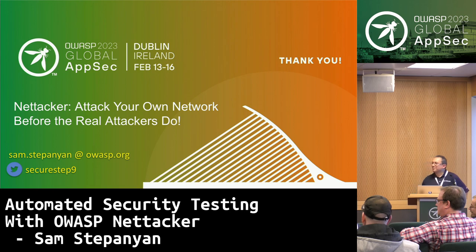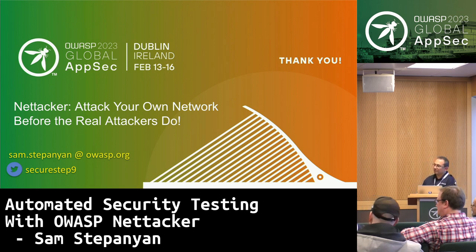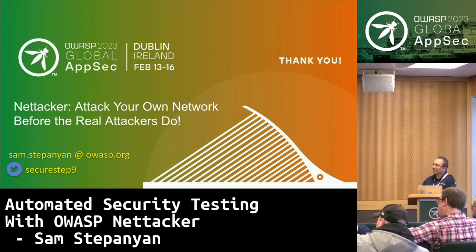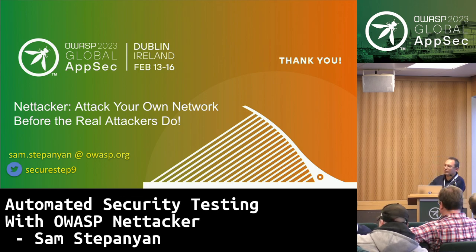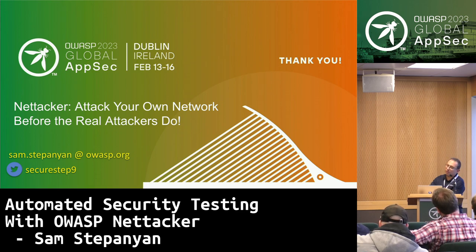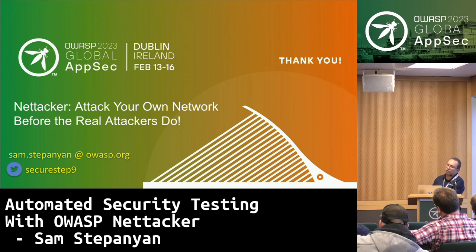Q&A: Thank you for the lecture — loved it. I was wondering, when you use the port scan feature, is it like Nmap where it uses the top 1,000 ports? Yes — just like Nmap, NetTacker will use the top 1,000 ports by default, but you can give it a range of ports. If you do 0 to 65,535 it will scan everything. By default it uses the top 1,000 most popular ports, just to speed up the scanning.